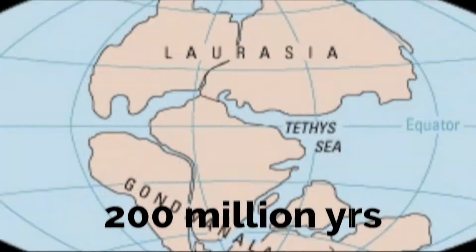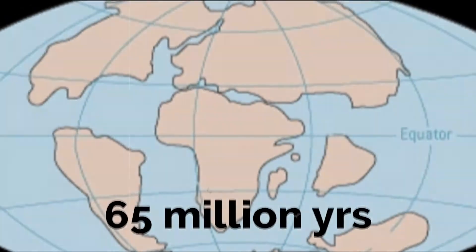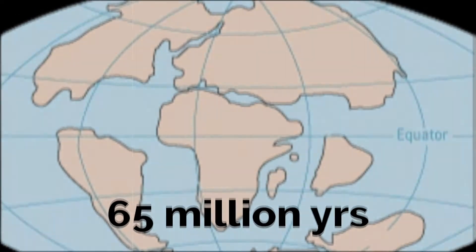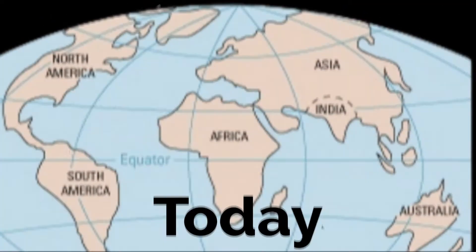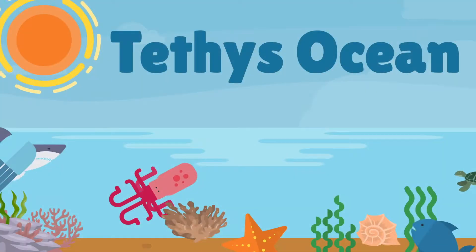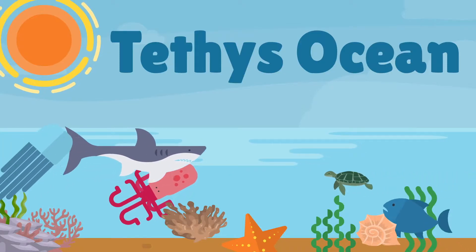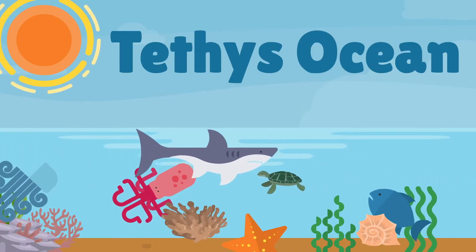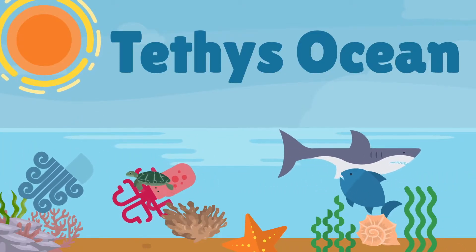200 million years ago, 150 million years ago, 65 million years ago, and today — this is how it looks like. But to answer the big question, there was a mighty ocean called the Tethys Ocean.